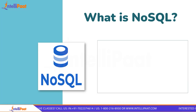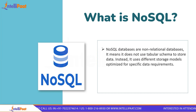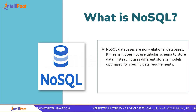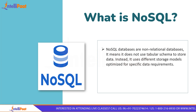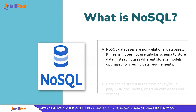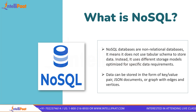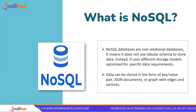Now let's look into what is NoSQL. A NoSQL database is a non-relational database, which means it does not use a tabular schema to store data. Unlike SQL, NoSQL uses storage models optimized to meet the specific requirements of the type of data being stored. For example, data can be stored as a key-value pair, JSON documents, or a graph with edges and vertices. NoSQL has gained popularity because of the widespread adoption of databases like MongoDB, Cassandra, and HBase.